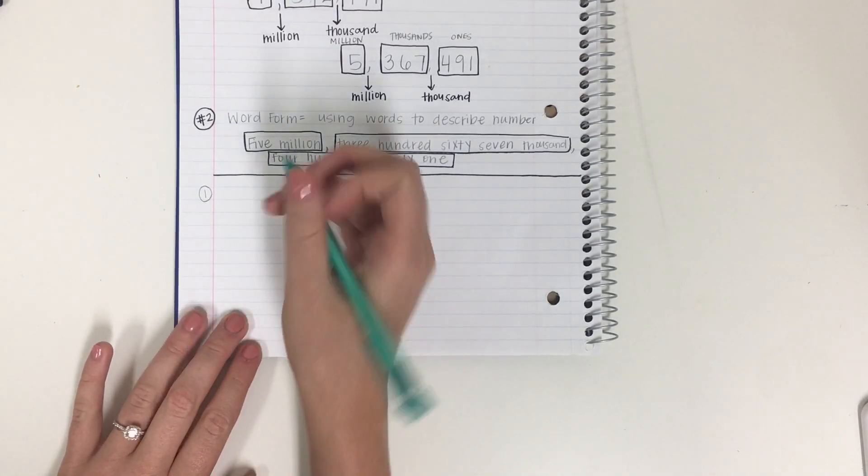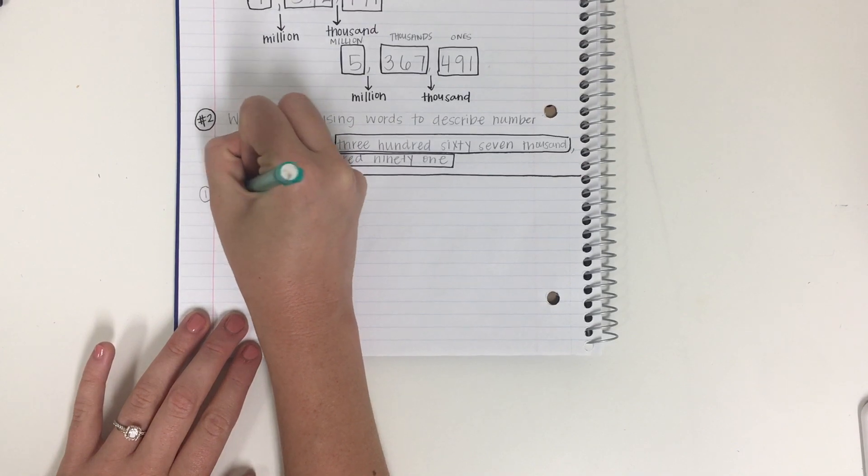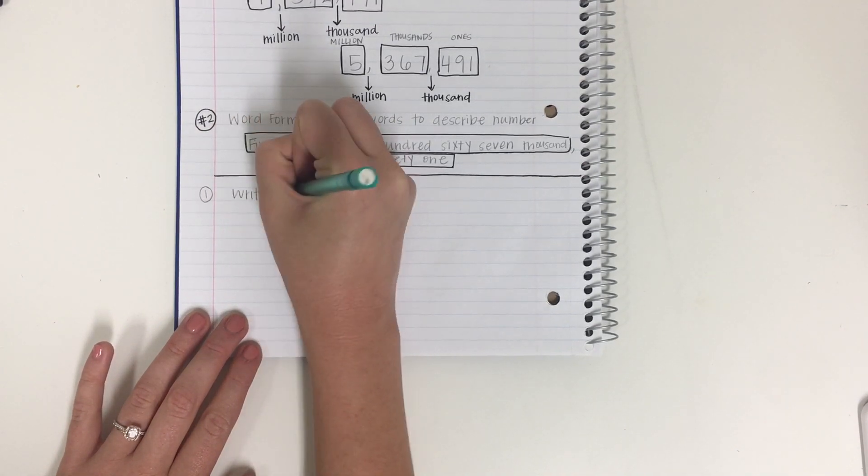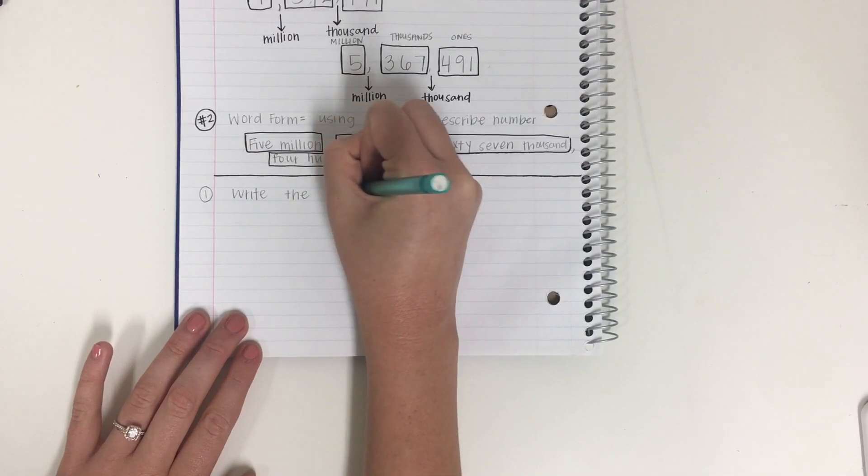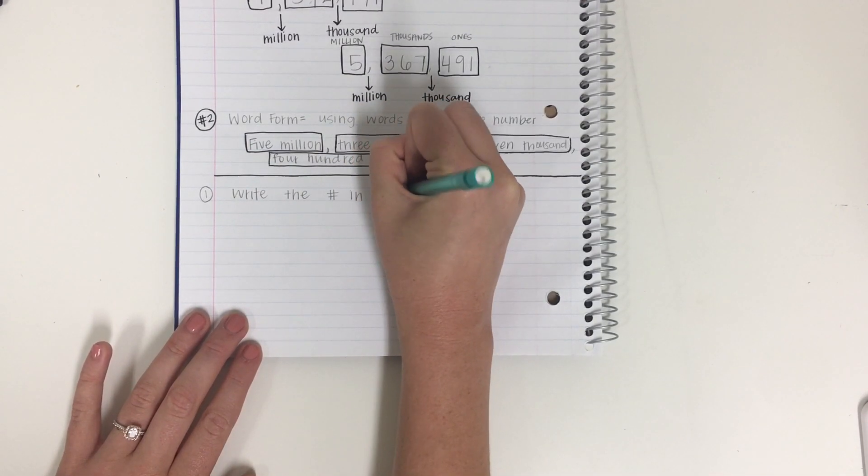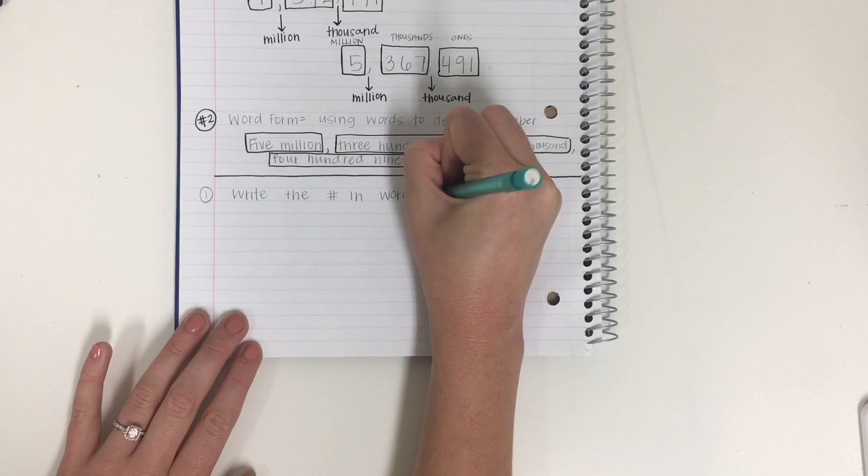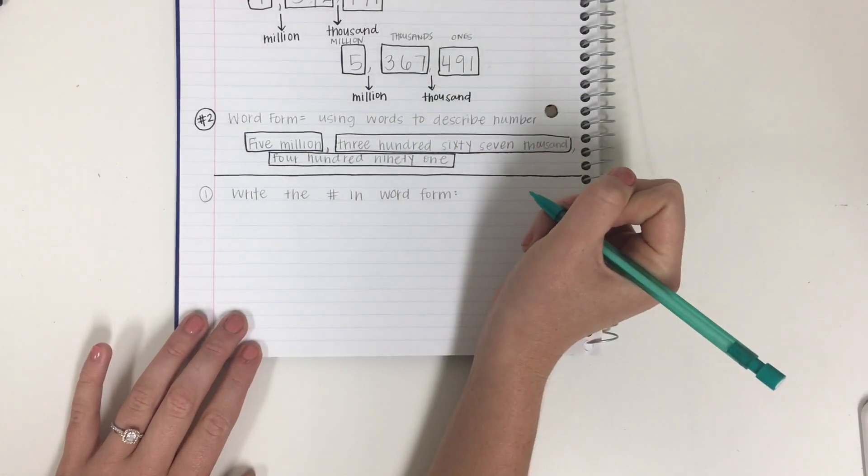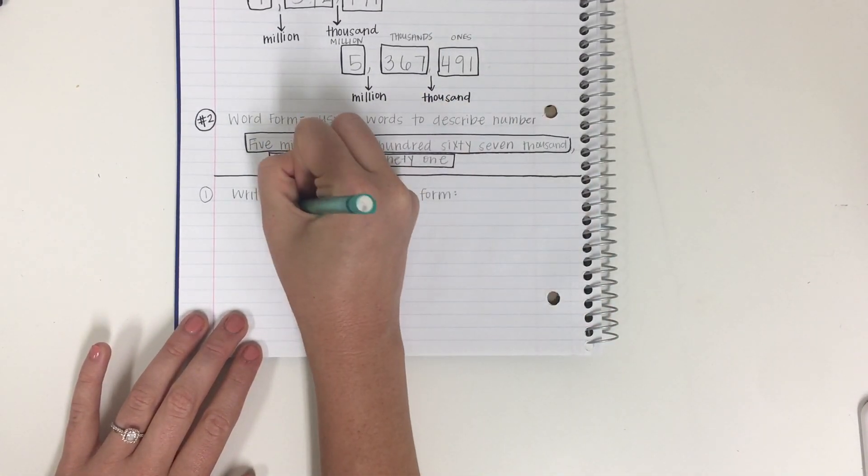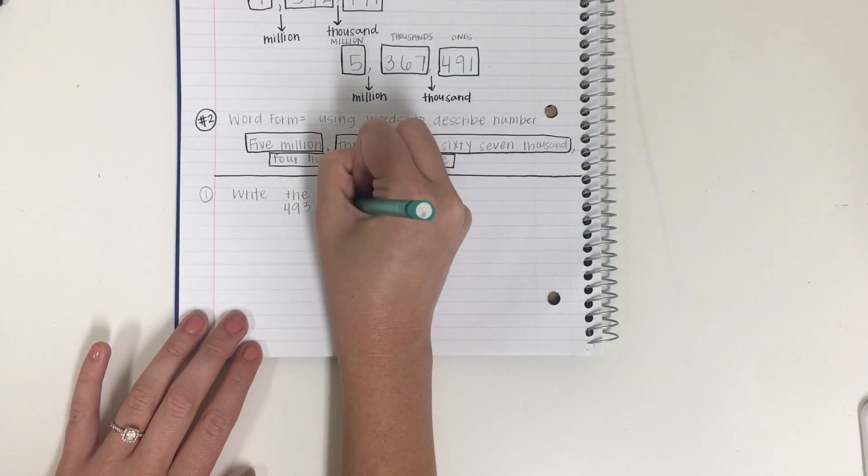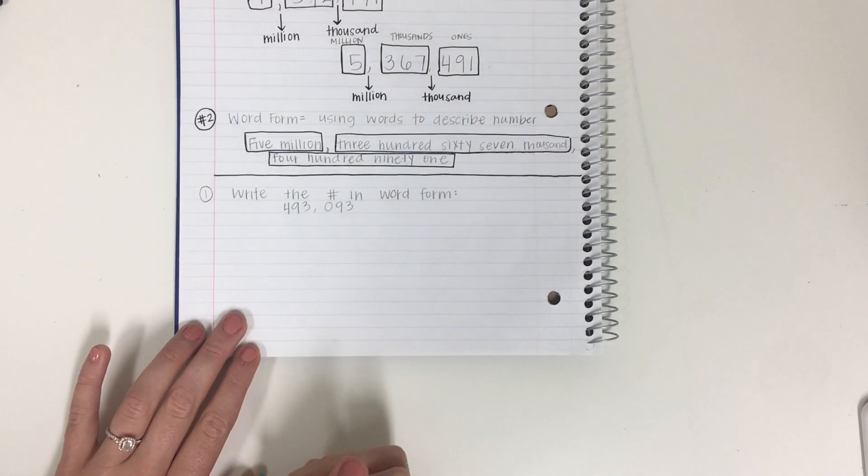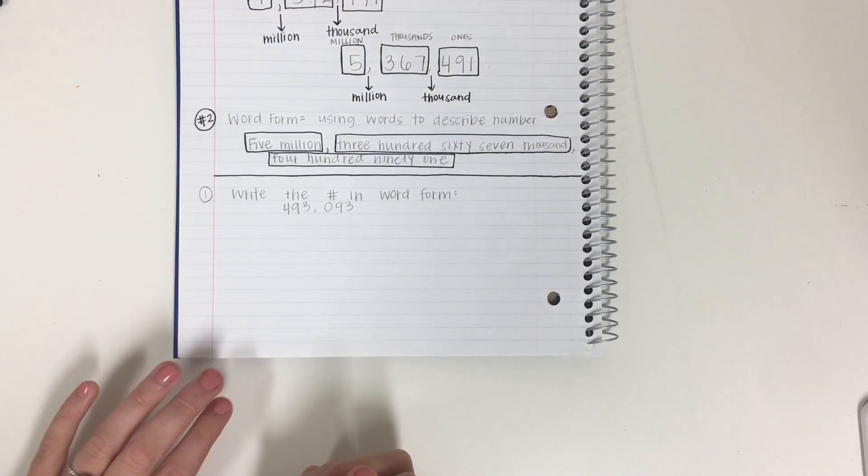So for standard form I want you to use those arrows and use the boxes. And then for word form I want you to use the boxes. And make sure not to forget about your commas. Okay? So here's the first problem I want you to bring in tomorrow. Let's do. Write the number in word form. And here is your number. Four...